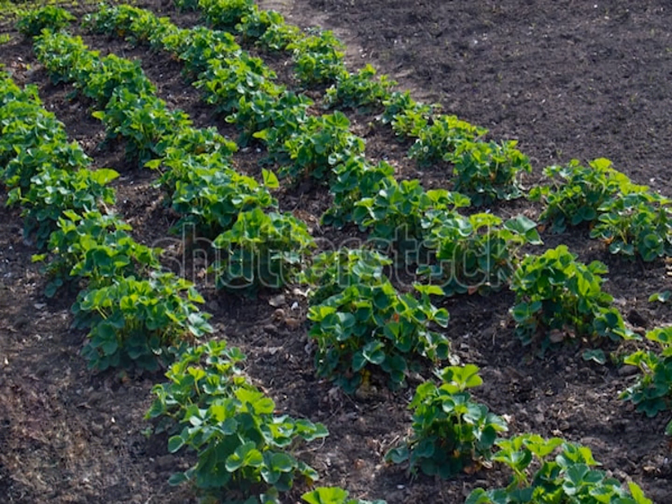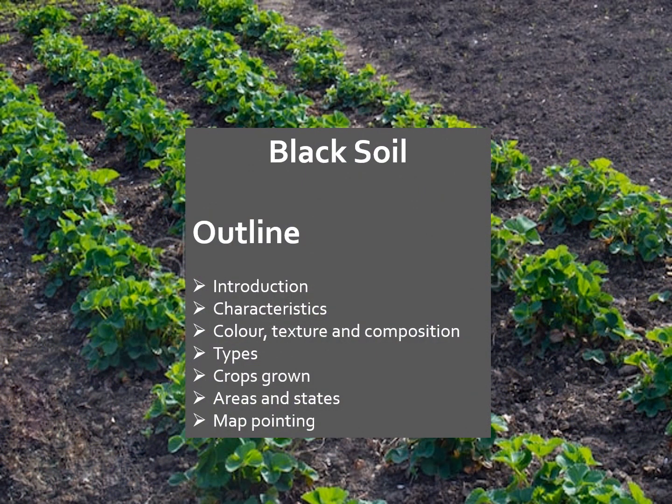The outline of the class is: introduction, characteristics of black soil, color, texture and composition, types of black soil, crops grown, areas and states where black soil is found, and at the end, map pointing. Let's learn about this topic in detail now.